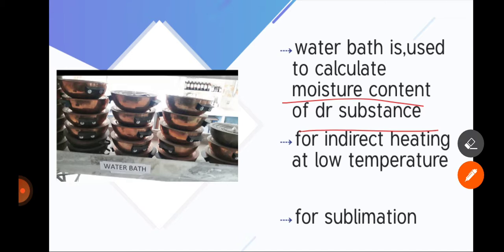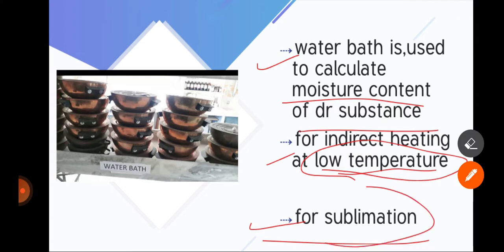For indirect heating at low temperature and for sublimation, these three things we need water bath for: moisture content of the substance, indirect heating, and sublimation. Sublimation is when solid substance directly converts into vapors without coming to the liquid state.